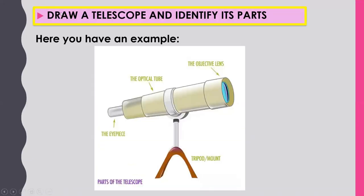Activity number one: draw a telescope and identify its parts. Here you have an example. Parts of the telescope: the objective lens, the optical tube, the eyepiece, tripod, and mount.